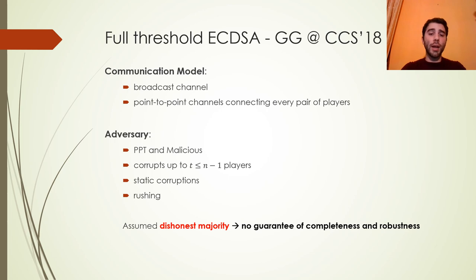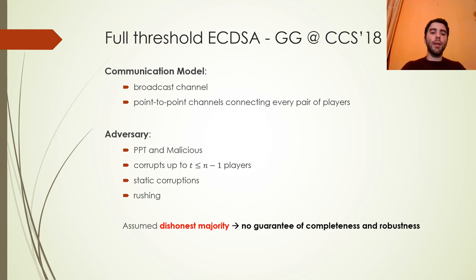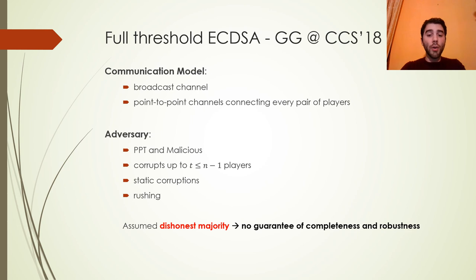The communication model consists of a broadcast channel where N players can also communicate in pairs using point-to-point channels. The adversary is malicious and probabilistic polynomial time. It can decide not to follow the protocol, corrupts up to T players where T can be up to N-1, meaning we can have only one honest player. It performs static corruption, deciding which players to corrupt at the beginning, and is also rushing. We assume dishonest majority, so we have no guarantee about completeness or robustness of the scheme.